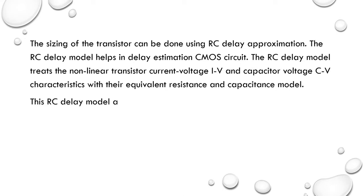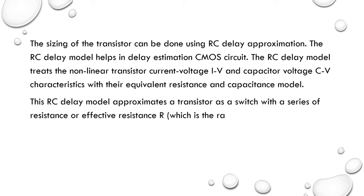This RC delay model approximates a transistor as a switch with a series resistance or effective resistance R, which is the ratio of the average value of VDS to IDS. The size of a unit transistor is approximated as 4 halves lambda.